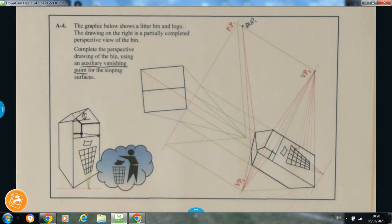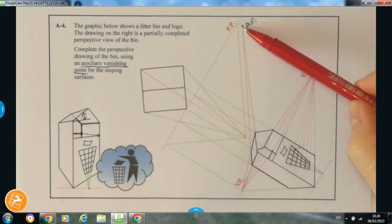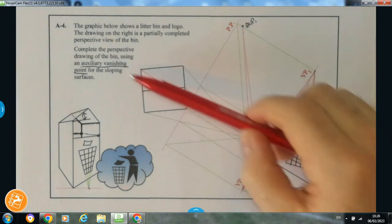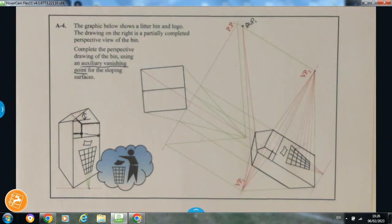That there is the 2012 Section A, Question 4, based on the topic of perspective at higher level. A little tricky part in that one is obviously just locating the auxiliary vanishing point to get the sloped surface here at the top on the roof. There is other ways you could obviously go about completing that, but that's the way they asked us to do it in the question. So we have to follow what they do. So I hope you found the help of guys to ask that question.